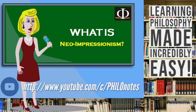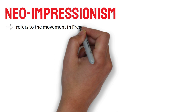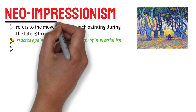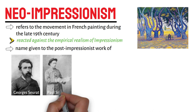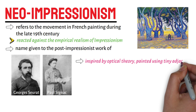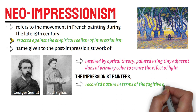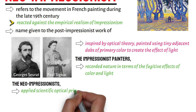Neo-Impressionism refers to the movement in French painting during the late 19th century that reacted against the empirical realism of Impressionism. It is the name given to the post-Impressionist work of Georges Seurat, Paul Signac, and their followers who, inspired by optical theory, painted using tiny adjacent dabs of primary colour to create the effect of light. Whereas the Impressionist painters spontaneously recorded nature in terms of the fugitive effects of colour and light, the Neo-Impressionists applied scientific optical principles of light and colour to create strictly formalised compositions.